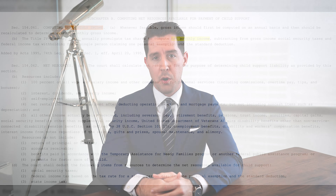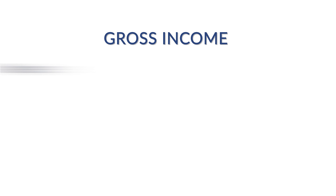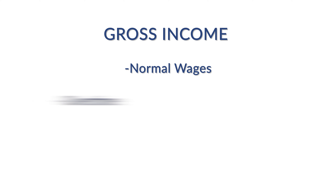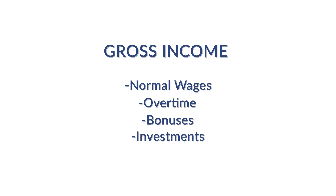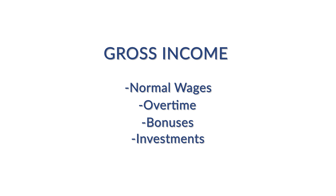Before we're able to determine a party's net monthly income, we must first determine a party's gross monthly income. Gross income is inclusive of any monies a party receives or earns as income each month, inclusive of normal wages, overtime, and bonuses. Income from investments such as interest and dividends may also be included in this calculation as well.